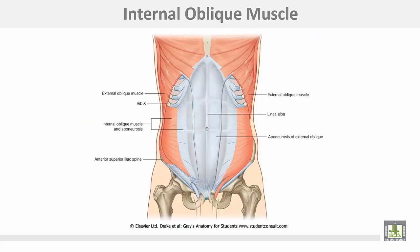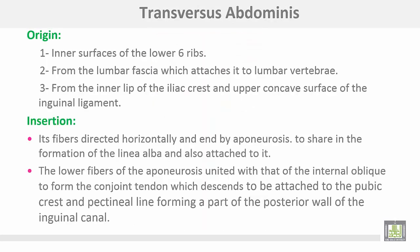This figure shows the internal oblique muscle directed upwards, forwards, and medially, ending by aponeurosis to be decussated with the opposite side, sharing in the formation of the linea alba in the midline.